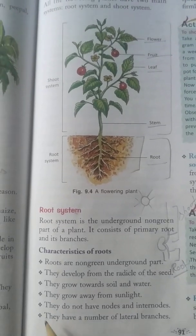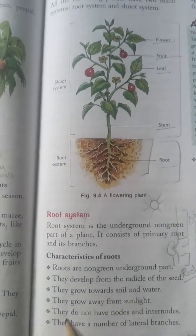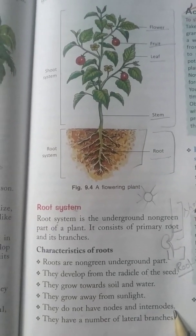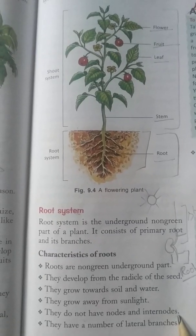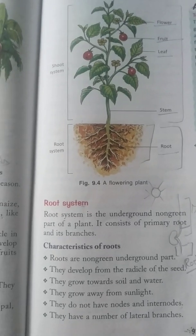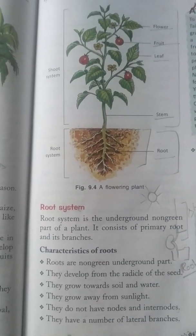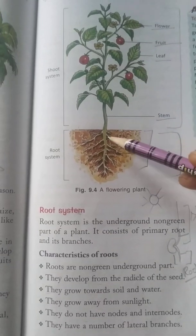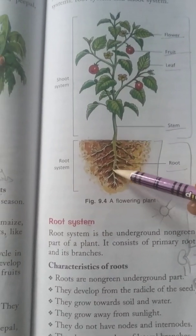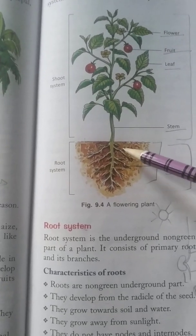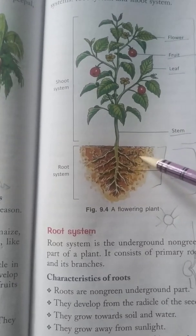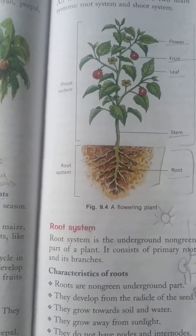Roots do not have nodes and internodes as the stem does. The root of the plant does not have such divisions. They have a number of lateral branches. As you can see in the picture, this is the primary root, these are the branches, and these branches are further divided into lateral branches.